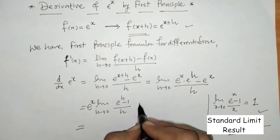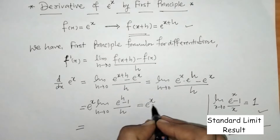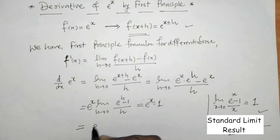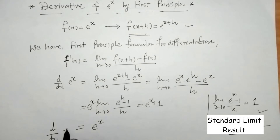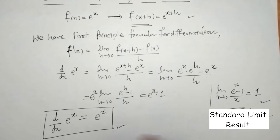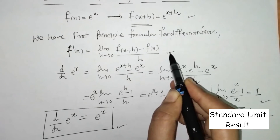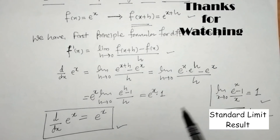So by this standard limit, the value here is 1, and we get e raised to x times 1, which equals e raised to x. So we have found that the derivative of e raised to x is e raised to x. In this way we find the derivative of eˣ by using first principle. That's it for now — see you in the next video, thank you, keep watching.